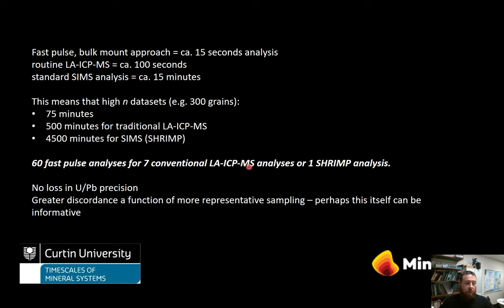The take-home message on timing: the fast pulse single-point ablation approach takes 15 seconds per analysis; routine laser ablation takes about 100 seconds; and a standard SHRIMP analysis takes 15 minutes. This means a high-end data set of 300 grains can be done in 75 minutes with the fast pulse approach, 500 minutes with the traditional laser approach, and 4500 minutes with SHRIMP.